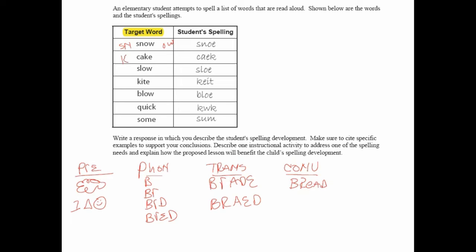In cake, there is a hard sound at the beginning and a silent E at the end. Slow has a blend in initial position — that is SL. Kite has a hard sound at the beginning and a silent E at the end. Blow has a blend in onset position and a long O in rhyme position. Quick is clearly a sight word because it's really hard to sound out — there's so much going on in it. Some is also a sight word, because if it followed the silent E rule it would be pronounced 'soam,' but it isn't.